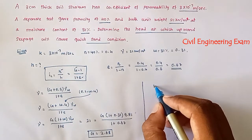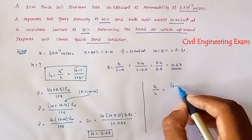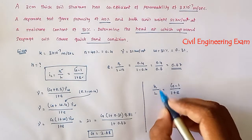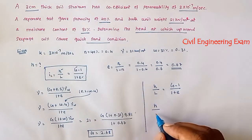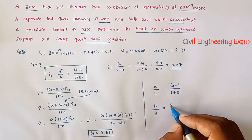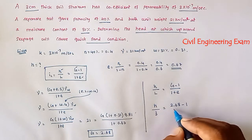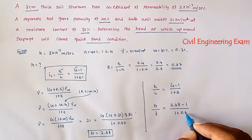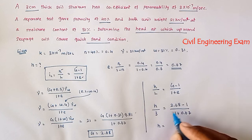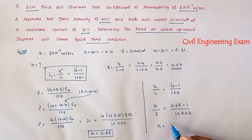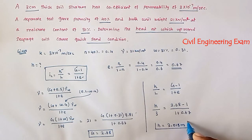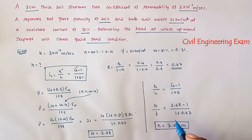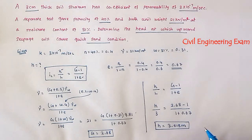Now we know all values: h/L = (G − 1)/(1 + e). With L = 3 cm (the thickness), G = 2.68, and e = 0.67: h/3 = (2.68 − 1)/(1 + 0.67). Solving this gives h = 3.018 meters. So 3.018 meters is the head at which upward seepage will cause the quicksand condition. We will see more problems in the next video — thank you.